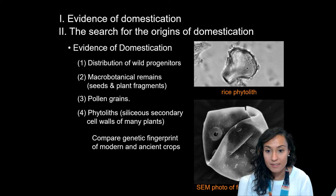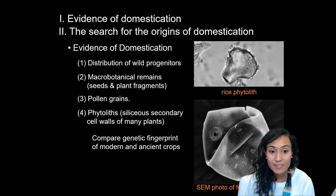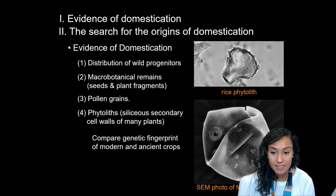Another source of evidence are phytoliths — basically vegetable tissues, the remains and husks of things like grain and corn. The identification of pollen grains as well as phytoliths indicates that early agriculturalists were using bladed threshing sledges to harvest crops. By looking at the structure of phytoliths, archaeologists have been able to compare the genetic fingerprint of modern and ancient domesticates and determine their original homelands and subsequent spread.